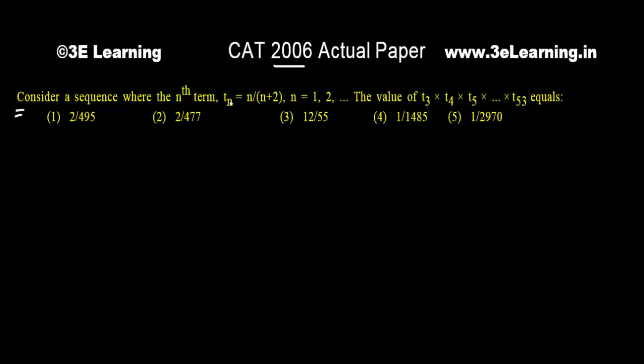So I found what is the value of tn. tn is given as n into n+2. Perfectly fine, and we have to find t3, t4, t5, so I wrote t3.